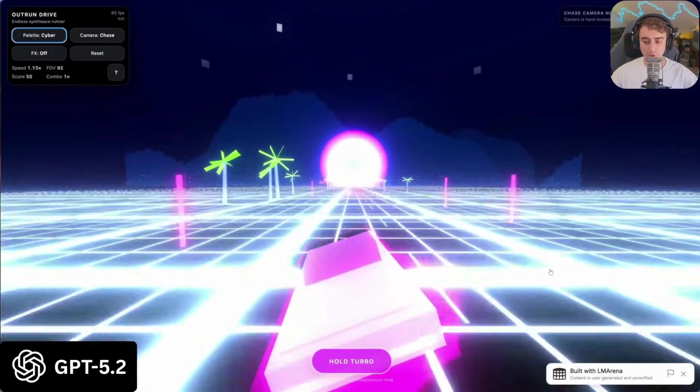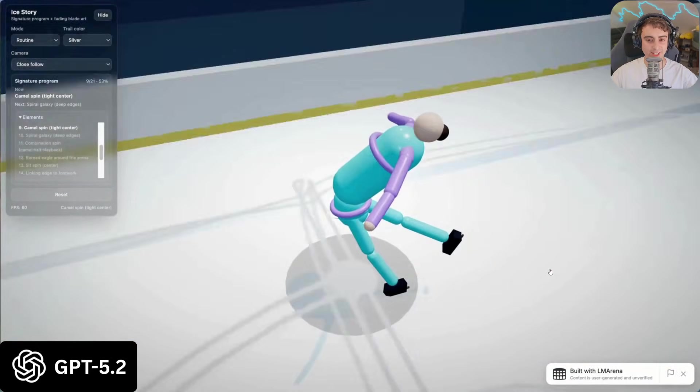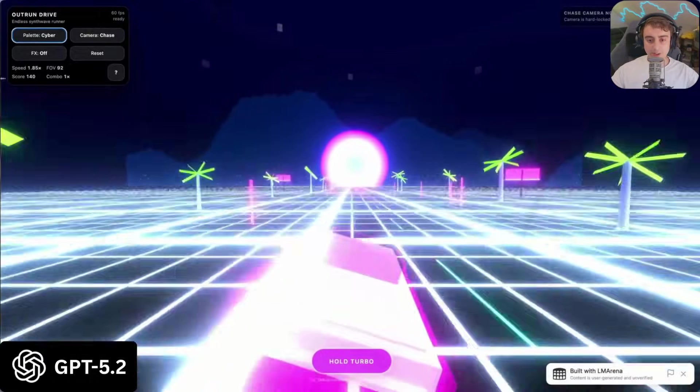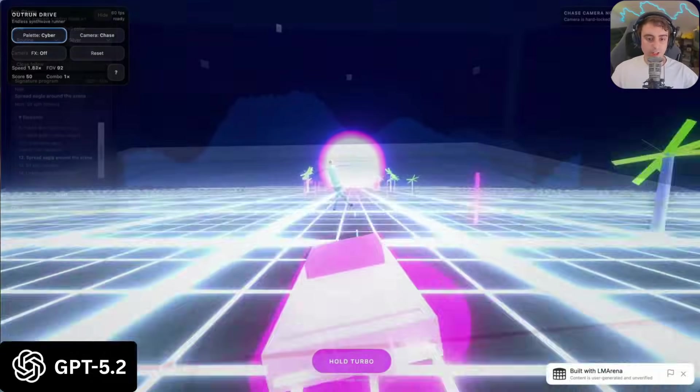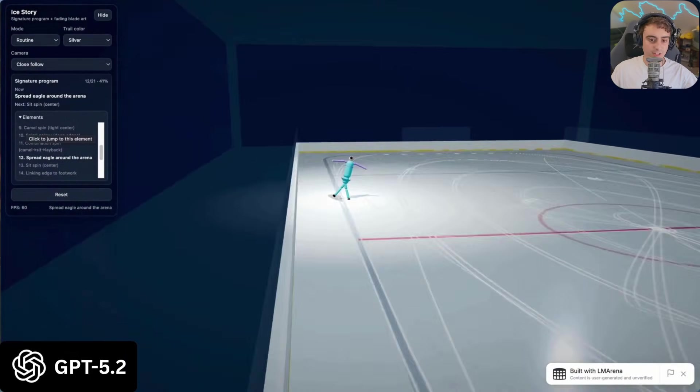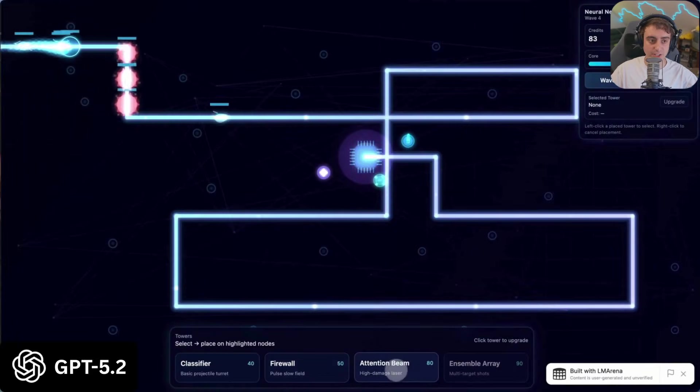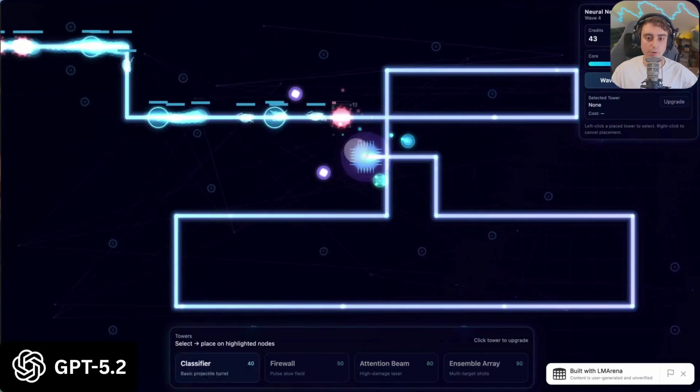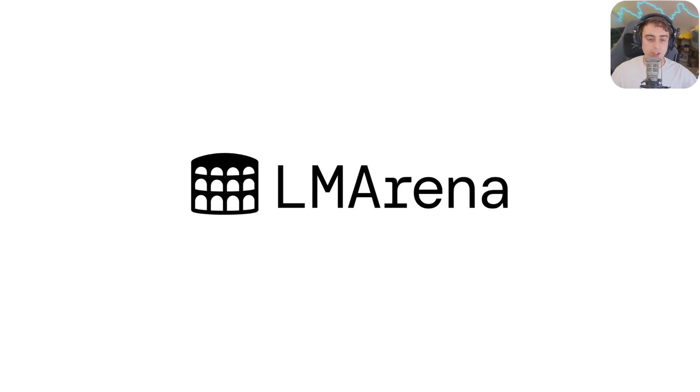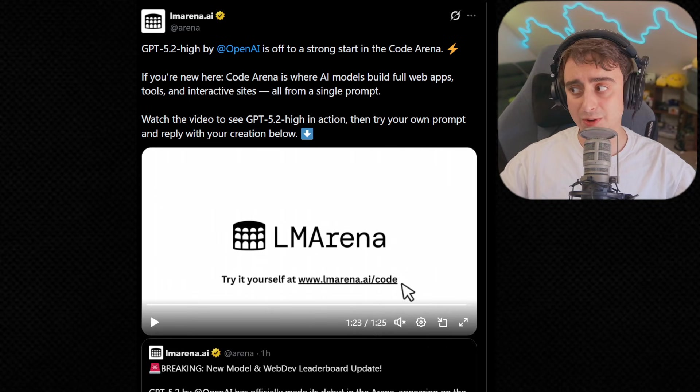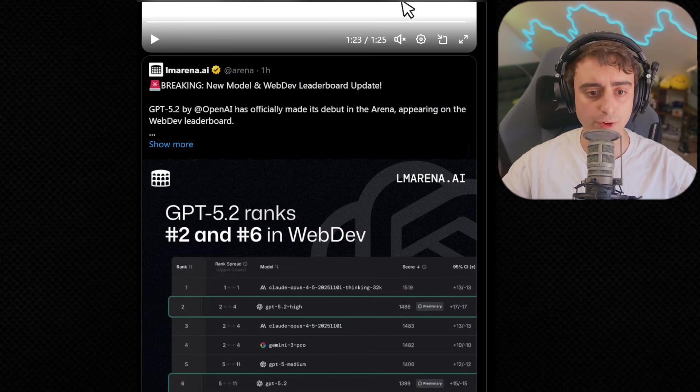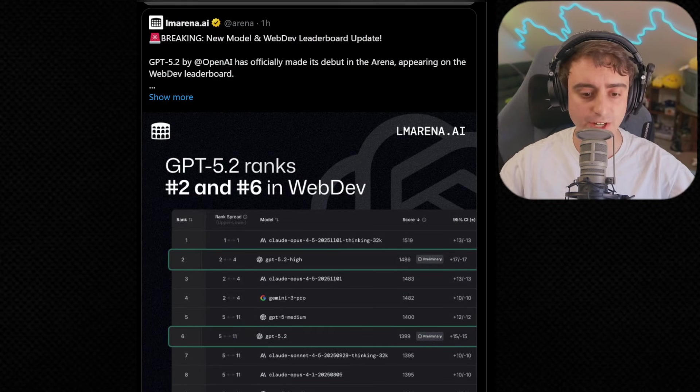Outrun Drive. Synthwave Runner. Ice Stories. Just doing some ice skating. And yeah, all of this does look rudimentary. It looks simple. But trust me, before Gemini 3, getting an AI to produce something on this level even was so difficult. This is definitely graduate level coding. It's starting to create projects cohesively. Just from that, I can tell you this has to be a bump over GPT 5.1, a pretty significant one.